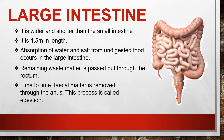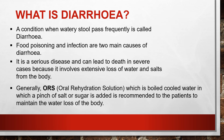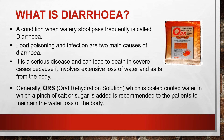The removal of fecal matter through the anus is called ejection. This is the last process of nutrition. There are five processes of nutrition: ingestion, digestion, absorption, assimilation, and ejection. Ejection is the process of removing waste material from our body through the anus.